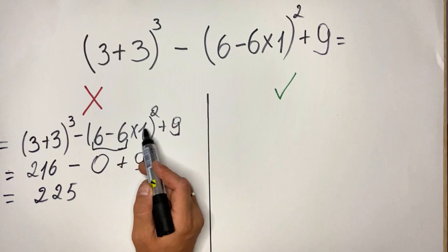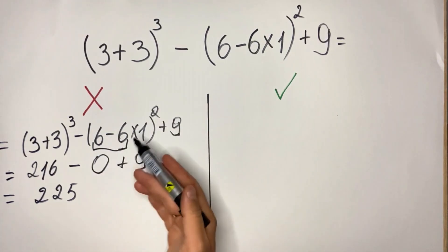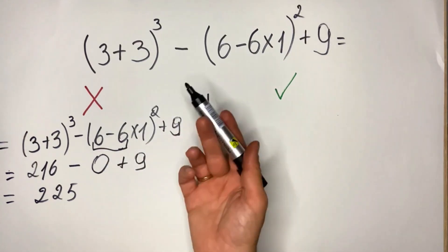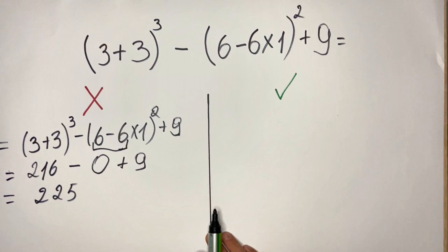Because if you did it correctly, 6 multiplied by 1 is 6, and 6 minus 6 is 0. So either way it's 0, but still I just wanted to highlight to you the mistake that most people are doing.